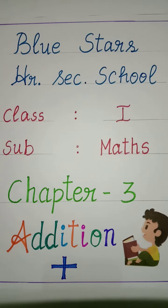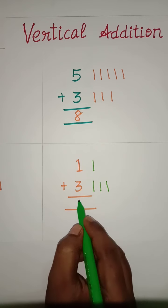See the last example. What number is it? 1. So, 1 line. What number is it? 3. So, 3 lines. 1, 2, 3. Now, count all the lines. 1, 2, 3, 4. So, answer is 4.